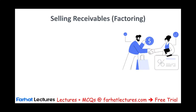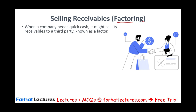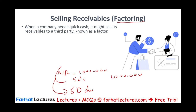Factoring is the technical term for selling receivables. When a company needs quick cash, it might sell its receivables to a third party known as a factor. So first we make a sale - say we have an accounts receivable of $1 million. Now we might give this customer 60 days to pay, but we need the money now. So what do we do? We go to a factor.